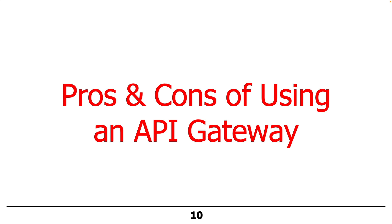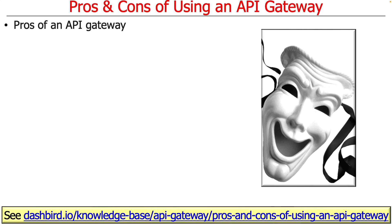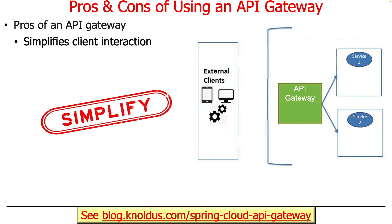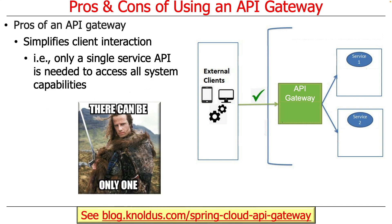Let's talk about the pros and cons of using the API Gateway pattern. One of the benefits is it simplifies client interaction — clients only have to know about one point of entry. There's only one service API needed to access everything exposed here. One of the cool things about how we do this with Spring is that it's actually very simple to program the Gateway because you don't write any code, or almost no code. You basically write declaration files in YAML.